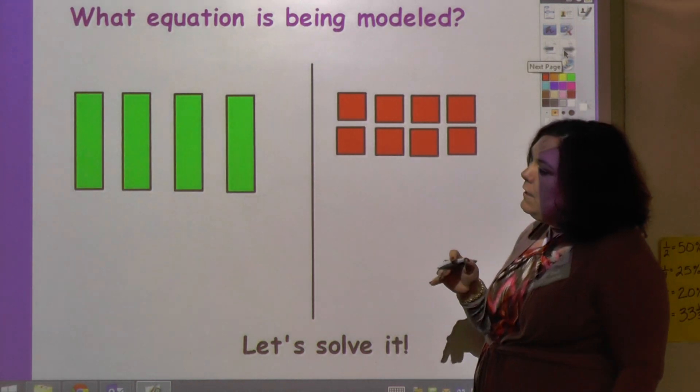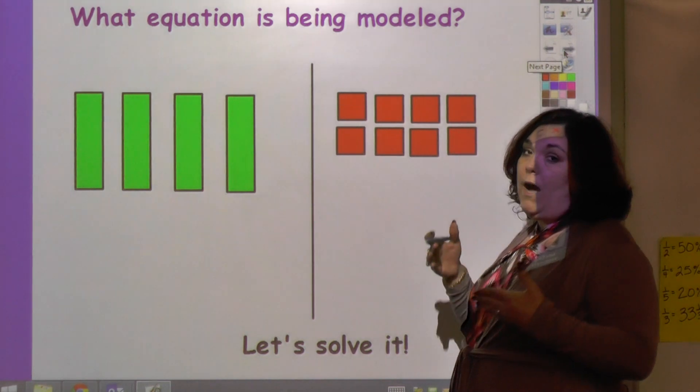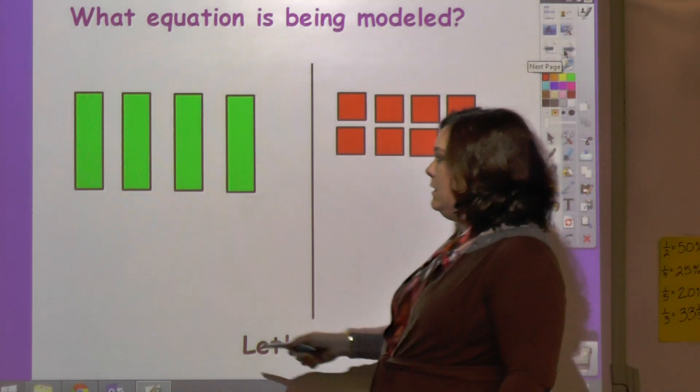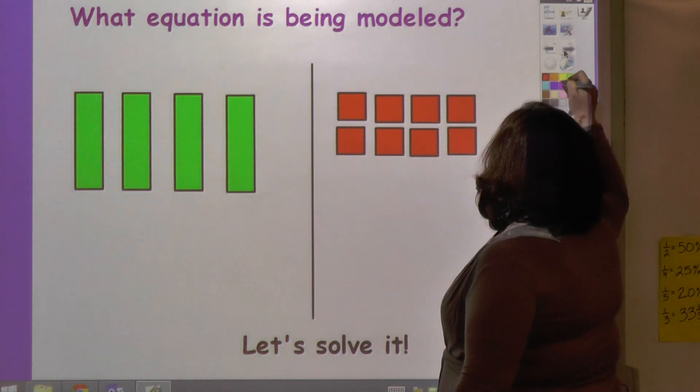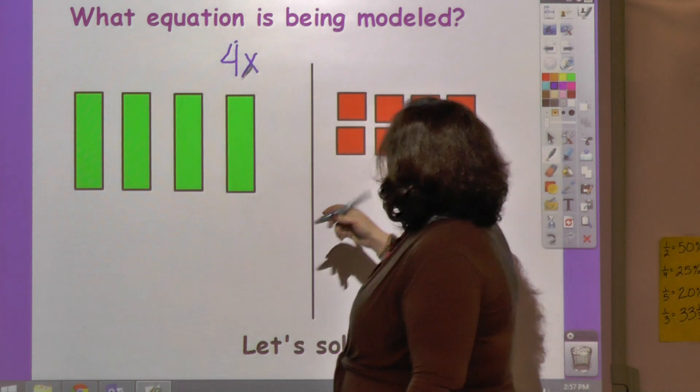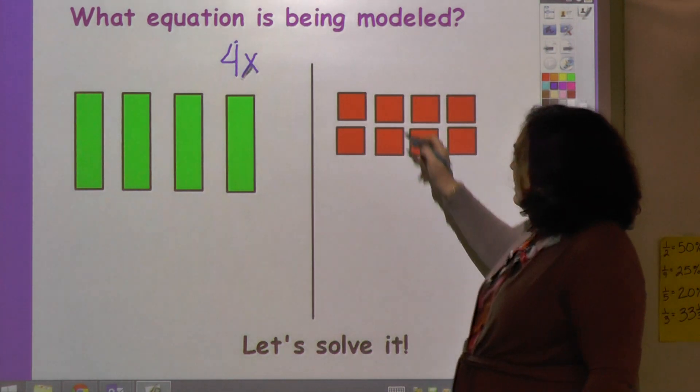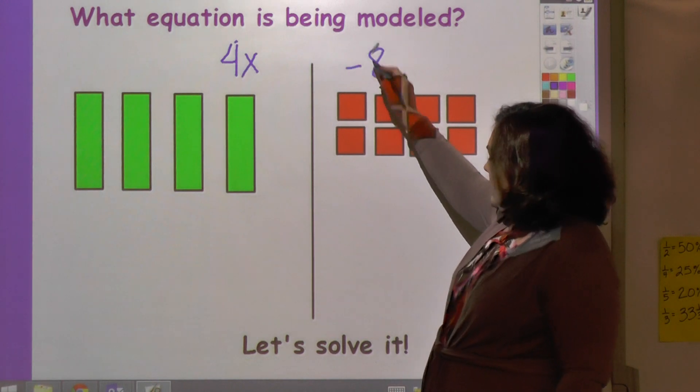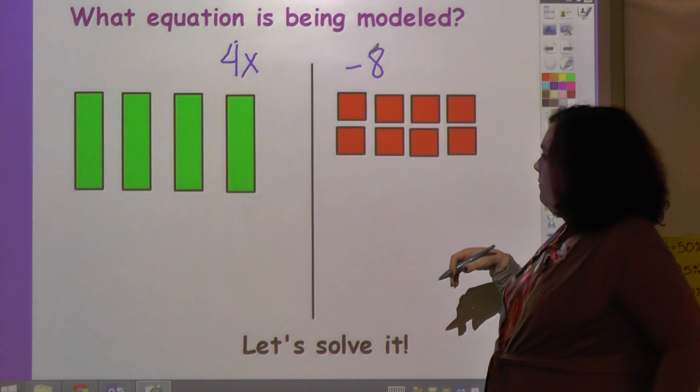Sometimes you're going to be given a model and you have to say what is being modeled. So it's easy. I've got x four times, so I would say that that is 4x. And then this is 1, 2, 3, 4, 5, 6, 7, 8. And that's negative 8 because they're red. This should tell you that negative is red.